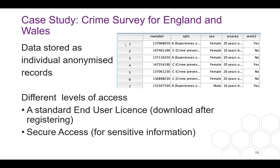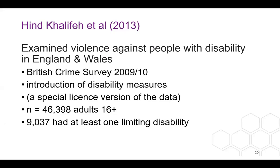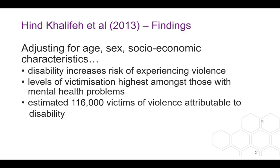This is the type of data you would get — a row including responses to the questions, each row reflecting an individual. A particular study using this looked at violence against people with disabilities in England and Wales, using the British Crime Survey 2009–10, which had an introduction of disability measures. The findings were that disability increases the risk of violence, highest amongst those with mental health problems, suggesting at national level that 116,000 people experience violence based on their disability.